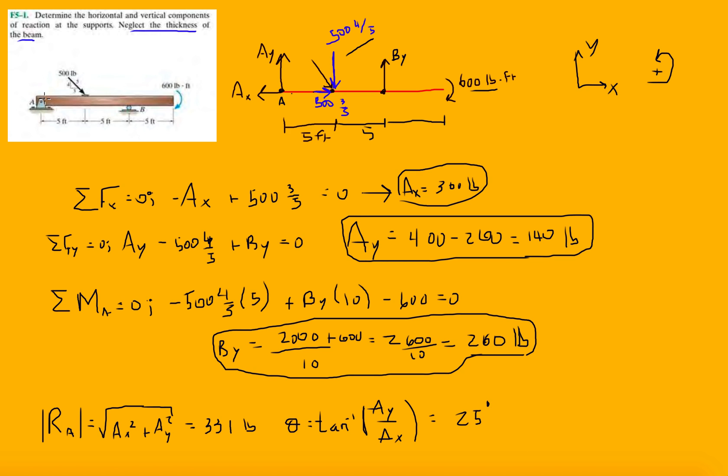So if we were to go back to the drawing and draw the reactions, we know By only has one component. So we know there is a reaction like this, this is By. And then we had Ax going in this direction, and then we had Ay going a little bit in the positive Y direction. And then our Ra, the reaction of those two - so Ax plus Ay give us a vector going this way. This will be our Ra at a 25-degree angle.